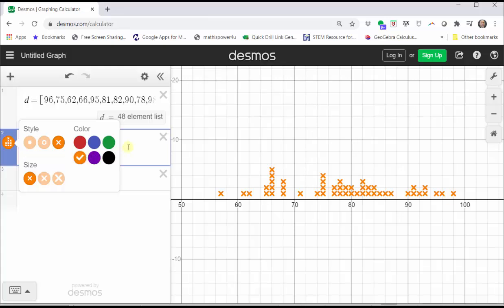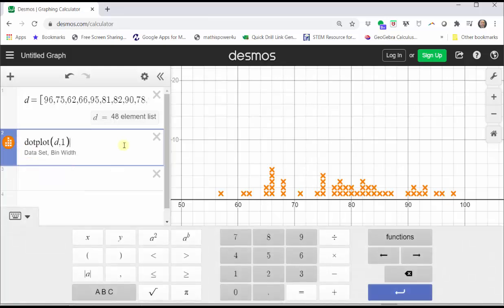To close the menu, just click outside the menu. And now we have our completed dot plot.